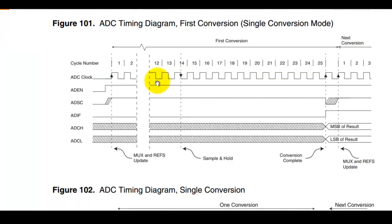This is the ADC timing diagram. The first conversion always takes 25 clock cycles, because when you start the ADC for the first time it takes time for the analog circuitry to initialize itself. After that, it takes only 13 clock cycles to complete a single conversion in single-shot mode.